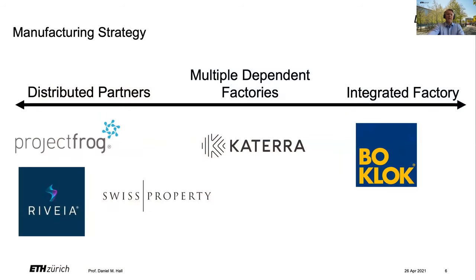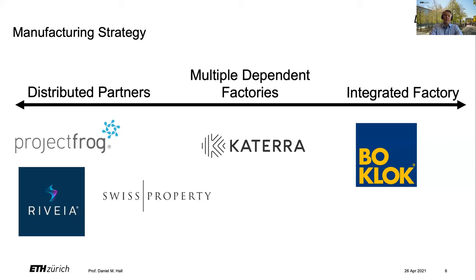A big thing we're going to talk about today is the idea of a manufacturing strategy. There are two different ways to handle this. On one side of the spectrum you have distributed partners — the idea that you have a distributed network of factories working together. Companies like Project Frog, Rivea, Splash Modular, and Swiss Property don't actually own the factory. They want to design and coordinate everything, but leave the risk of high capital investments to other companies that already own a factory, or they contract with these factories.